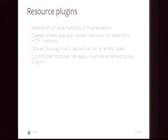On a resource plugin, methods are named exactly as the HTTP method. If you have a get method, it handles GET requests; a post method handles POST requests; patch method for PATCH requests, and so on. We have one entity plugin to rule them all, and it exposes derivatives for each entity type — a feature of the plugin system. Contributed modules can hook in to provide new resources.